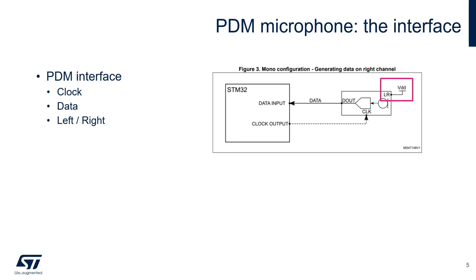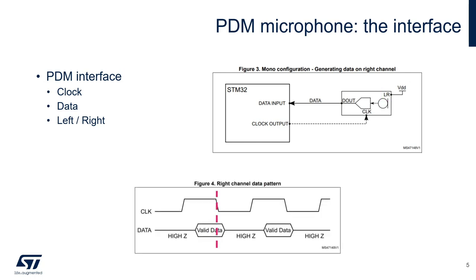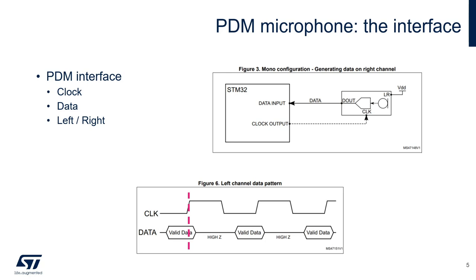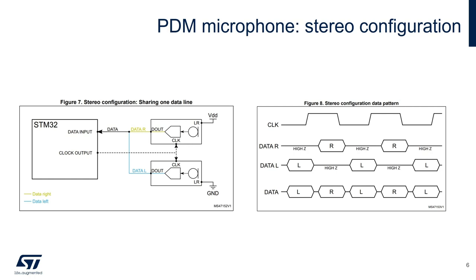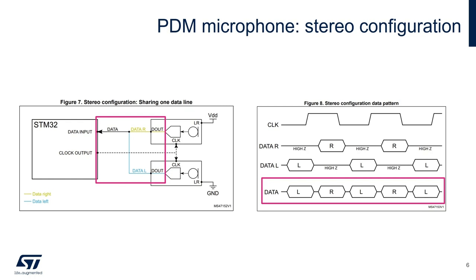If this pin is set to a high logical level, the microphone is in its right configuration. This means that it will provide data on the falling edge of the clock, releasing the data line on the rising edge. If this pin is set to a low logical level, on the contrary, the microphone is in its left configuration. This means that it will provide data on the rising edge of the clock, releasing the line on the falling edge. This left-right mechanism allows to use a single data line to transport the data coming from two PDM microphones, if they are configured with opposite left-right pin. This would allow to further reduce the signals to be routed and simplify the board layout. In the image, you can see the typical connection of two microphones sharing the same data line. Please note the opposite left-right configuration, the common clock input, and the common data line, controlled by each microphone on its clock edge.